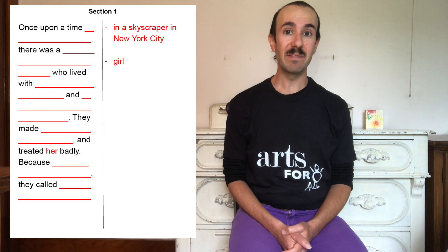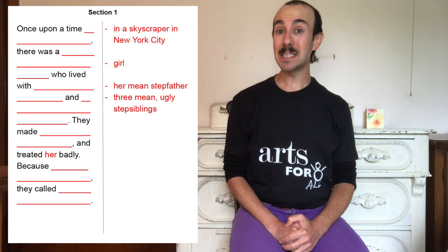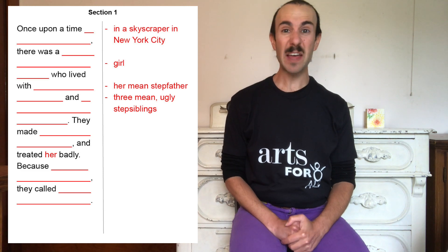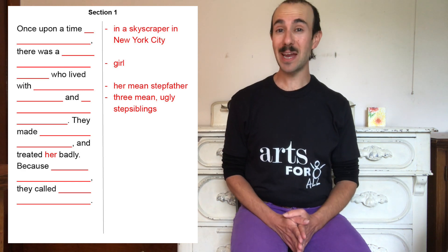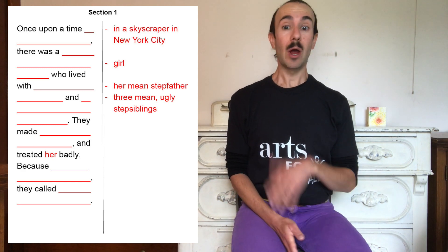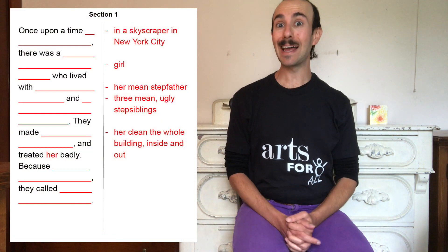Now who is the villain? And do they have mean helpers? All our stories so far have featured cruel stepmothers, but we've seen one, two, or three stepsisters. You could also make the villain a boss at work, or a mean teacher, or a neighborhood bully. And if you did, who might be their helpers? Our second graders decided on a stepfather and three mean, ugly step-siblings — that means brothers and sisters or any combination of those. What's the work that the mean folks make your main character do? They might have to cook and clean, or whatever else your villain and their helpers don't want to do. Our second graders decided that she would clean the whole building inside and out.